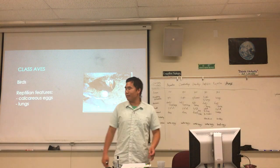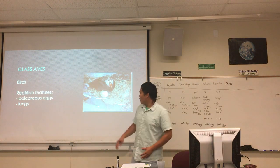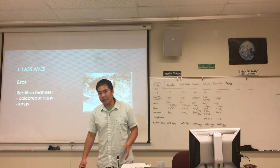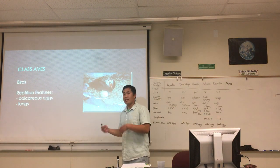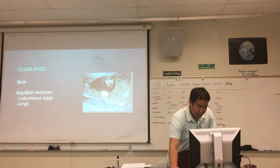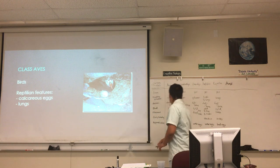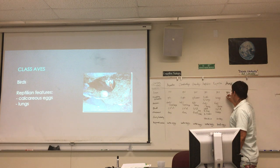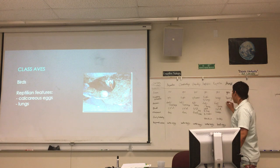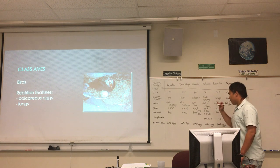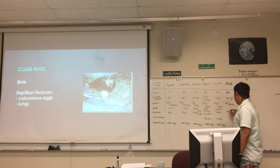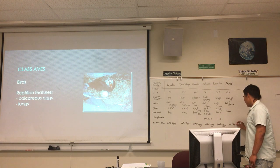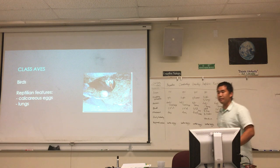Calcareous eggs are not ideal for marine organisms — remember the sea turtle problem. Birds also have lungs and limbs. So let's fill in the table for Class Aves: jaws, lungs as breathing structures, full bone skeleton, limbs for movement, and for reproduction — land eggs. We'll add the rest as we go through.